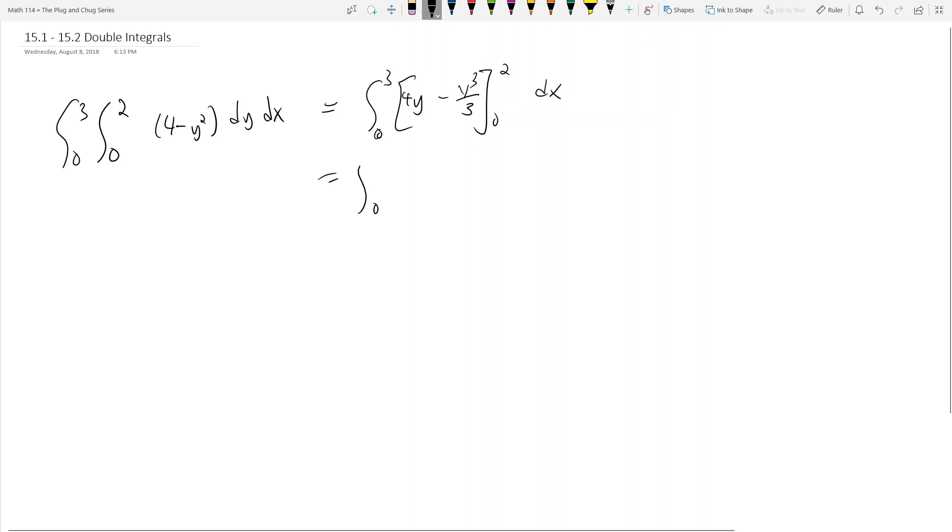What is this? Well now this becomes the integral from 0 to 3. The inside becomes 8 minus 8 thirds, so 8 minus 8 thirds dx. This thing is also then 16 thirds dx, right? And finally I got to integrate 16 thirds with respect to dx, and what do I get? I guess 16 over 3x evaluated from 0 to 3, and finally that just becomes the answer 16.